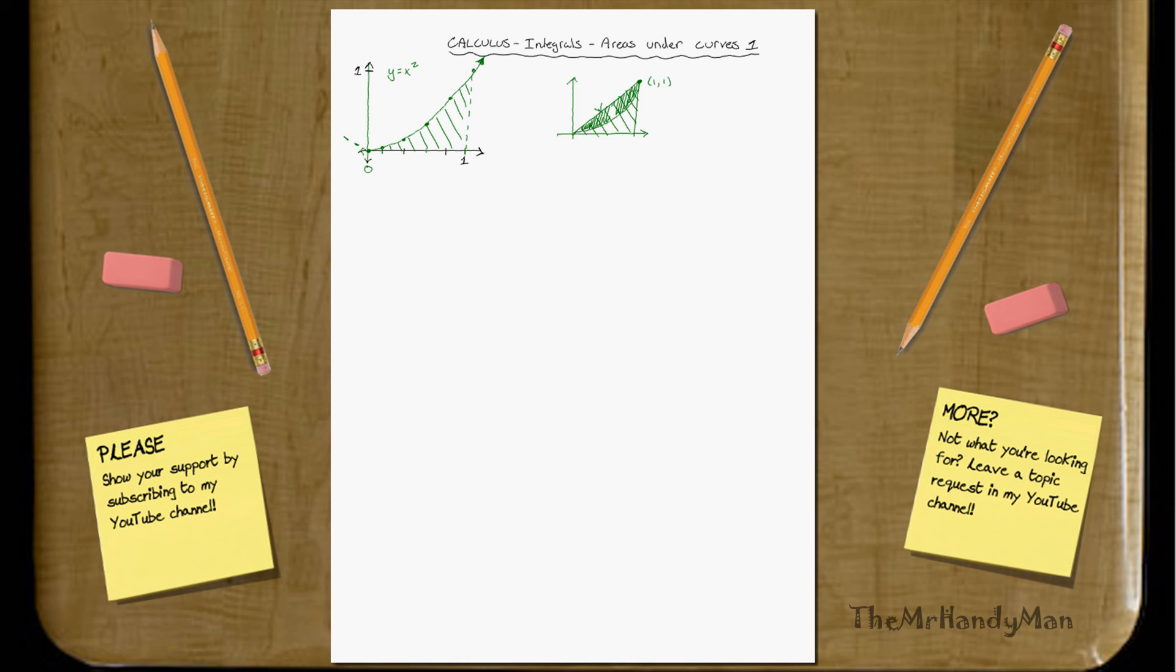However, you know that you would be incorrect by this amount of error. The really dark shaded area would be considered your error.